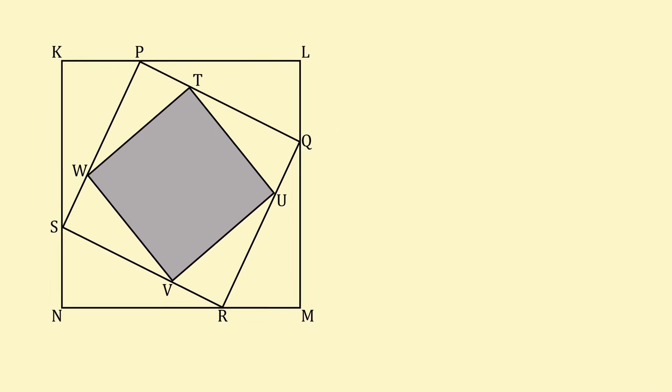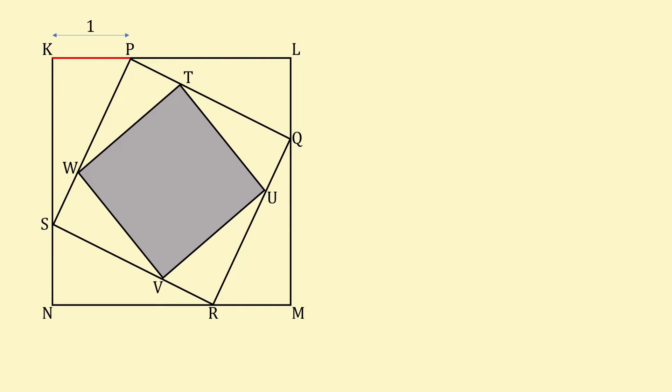Here's a solution. Point P divides side KL in the ratio 1 to 2. So let's choose KP to be 1 and PL to be 2. This means the sides of square KLMN are 3. Again, we can label the other sides of the square too.